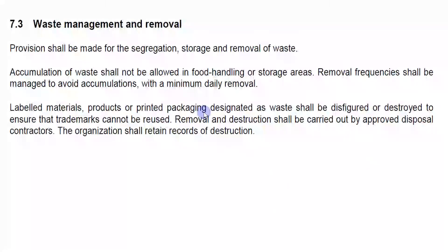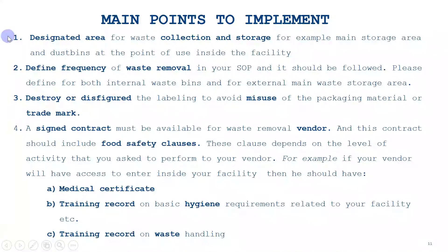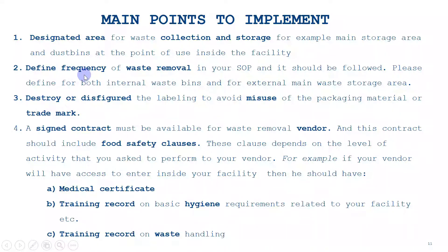Now I will describe clause 7.3, which is waste management and removal. First is designated area, as described before. Second is defined frequency in your waste procedure - in the standard it is mentioned that minimum once a day waste should be removed from inside the premises, so there is no compromise: you have to mention daily frequency for removal from inside the premises.